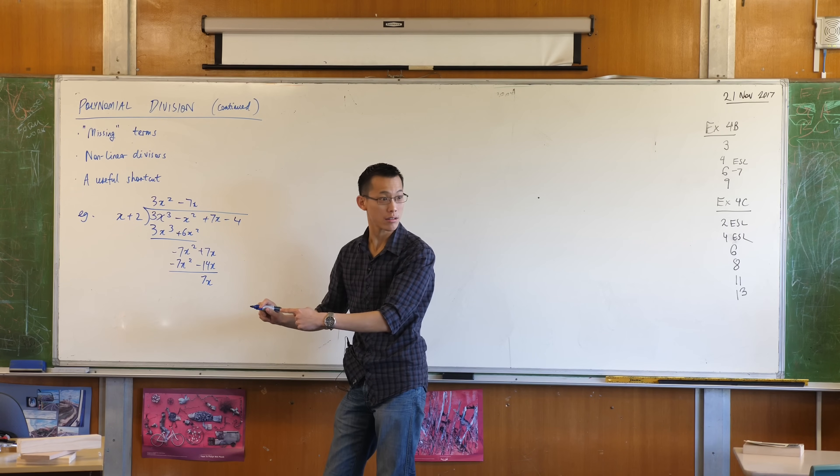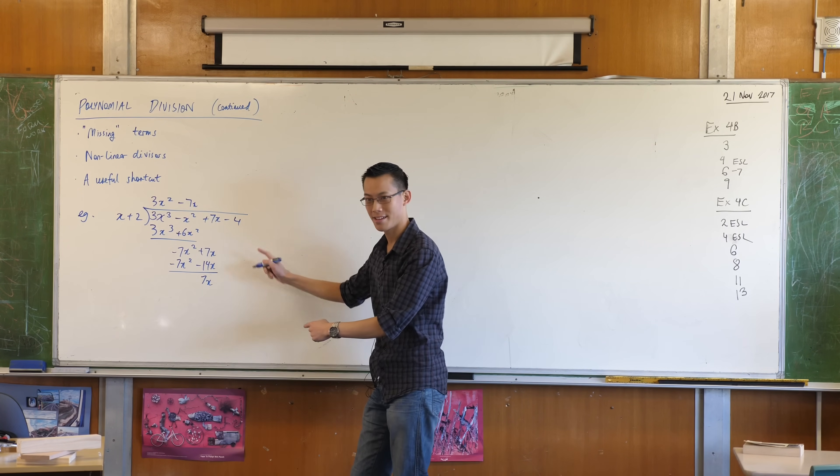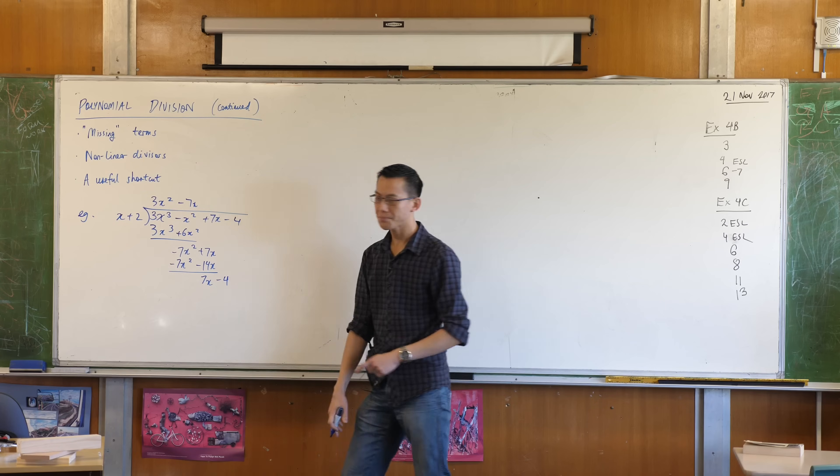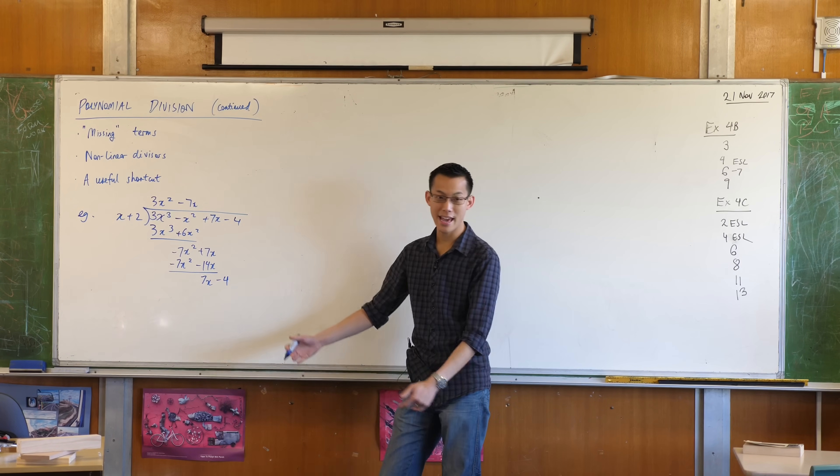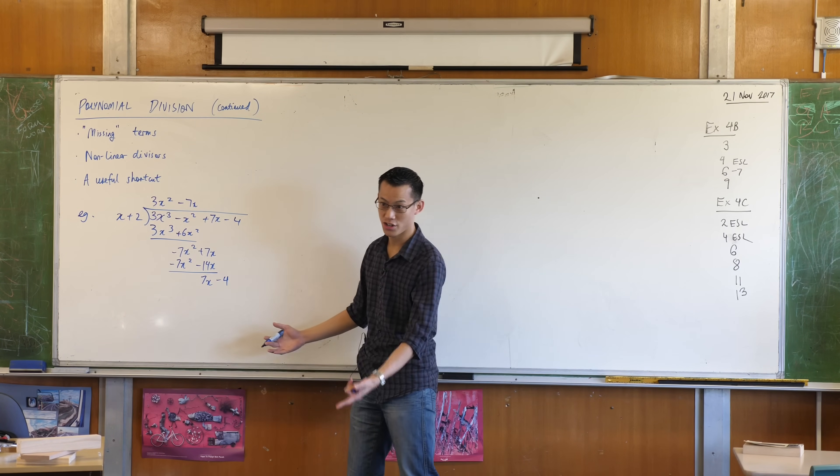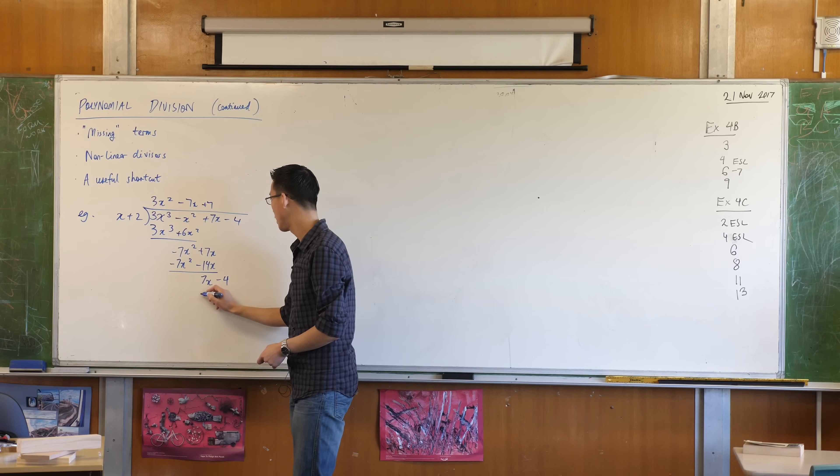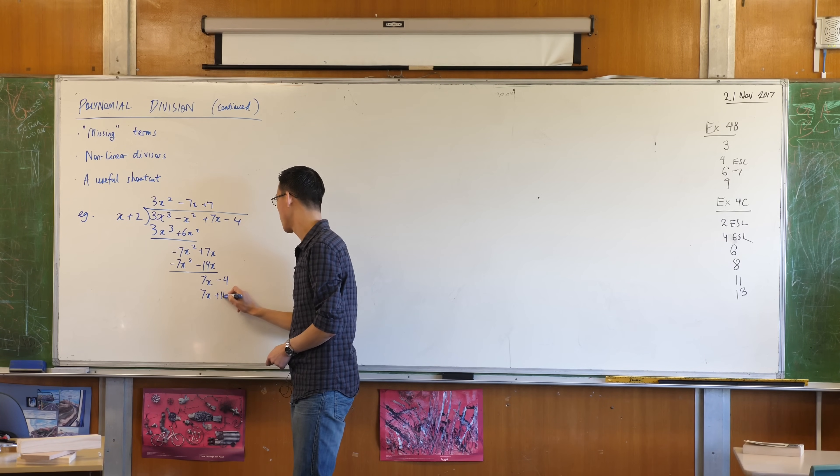7x. Is that right? Yeah? Minus negative 14x. I will bring down this negative 4, and I'm pretty much there. How many x's fit into 7x? By definition, 7. Plus 7, right? I go here, 7x plus 14.